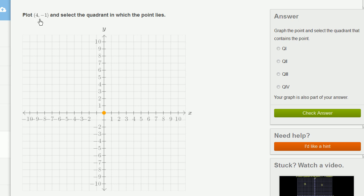Plot 4 comma negative 1 and select the quadrant in which the point lies. So 4, the first number in our ordered pair, that's our x-coordinate. That says how far to move in the horizontal or the x-direction. It's a positive 4.